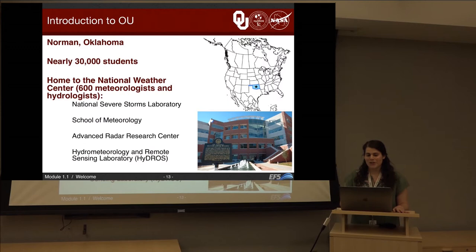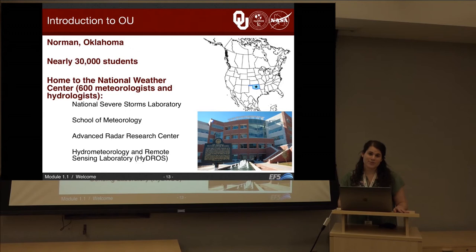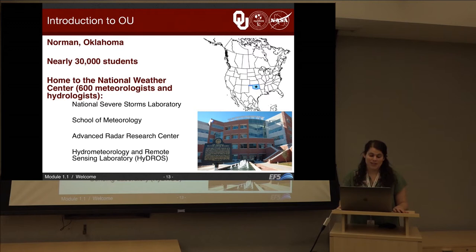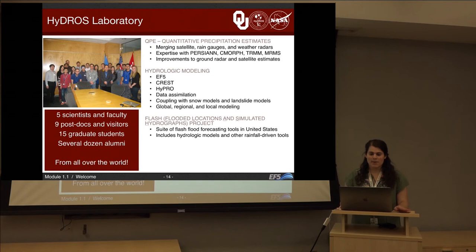A little bit about the University of Oklahoma, where we record these videos. We are located in Norman, Oklahoma, which is about in the center of the United States. There are about 30,000 students made up of undergrads, graduate students, law students, and medical students. The National Weather Center here employs over 600 meteorologists and hydrologists and houses the National Severe Storms Laboratory, the School of Meteorology, the Advanced Radar Research Center, and our research group, the Hydro-Meteorology and Remote Sensing Laboratory, or HYDROS. The HYDROS Laboratory is made up of five scientists and faculty, nine post-docs and visitors, 15 graduate students, and several alumni from all over the world.